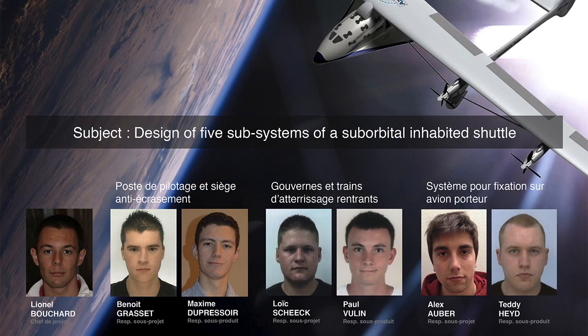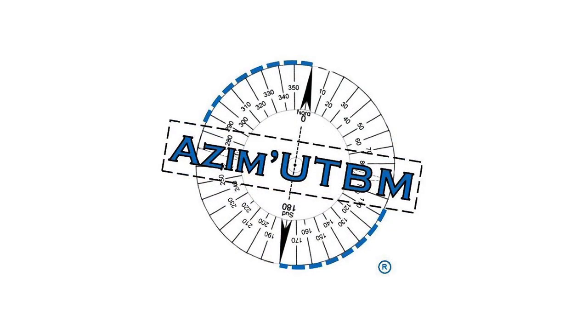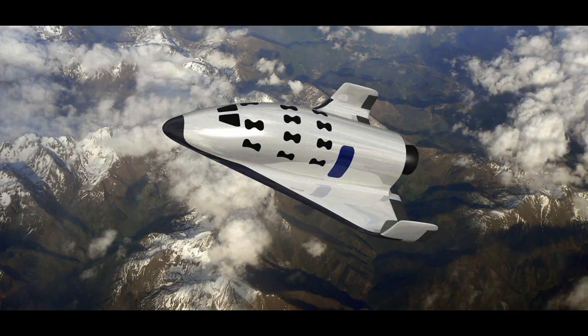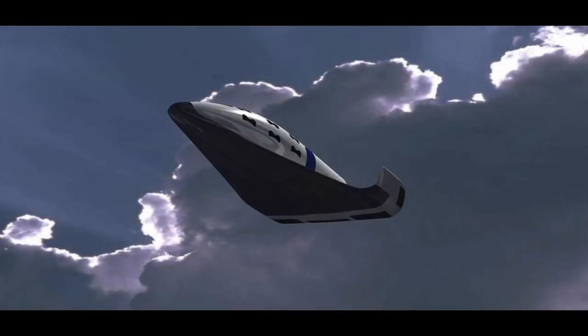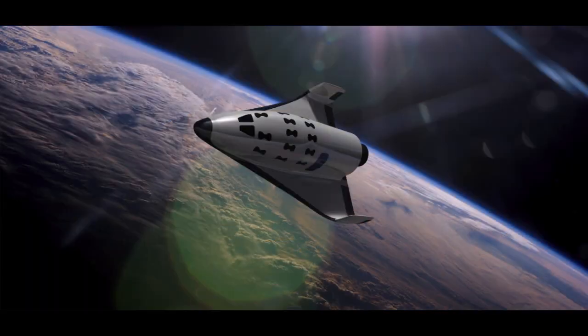It consists in designing, from A to Z, five specific subsystems of the suborbital shuttle of the Aerospace Student Challenge Team. This shuttle is designed to transport eight persons maximum to the limit of our atmosphere in order to experience three to four minutes of weightlessness.